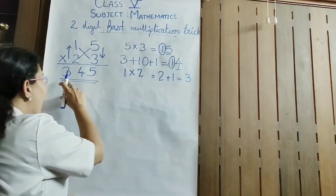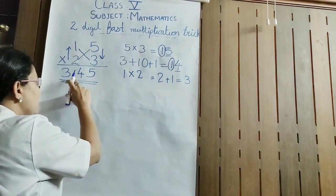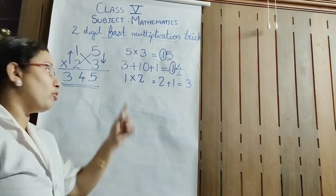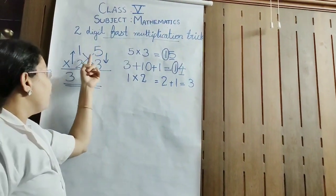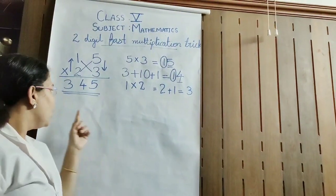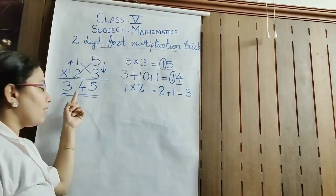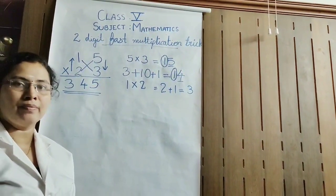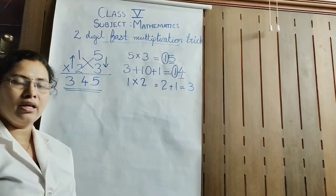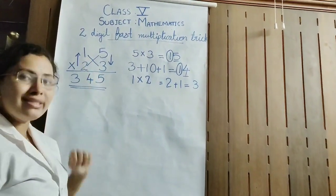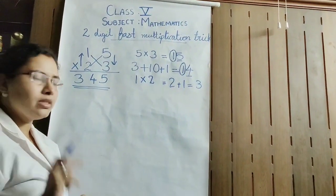So your answer comes as 345. If you multiply 15 into 23, you will be getting 345. It is very easy, right? You are getting it in one step.